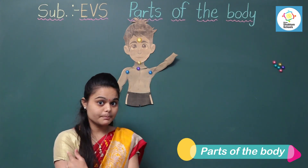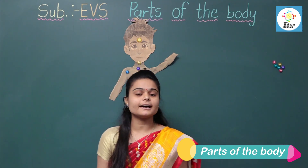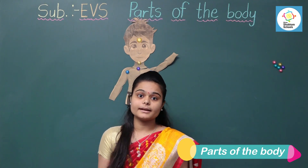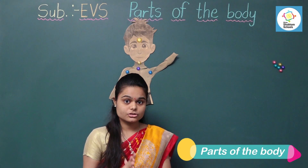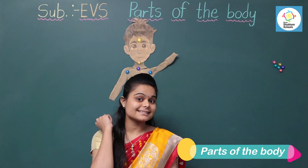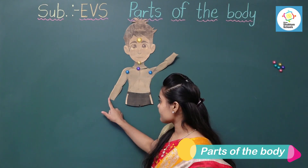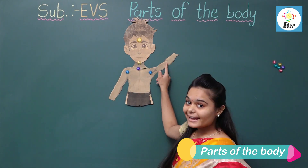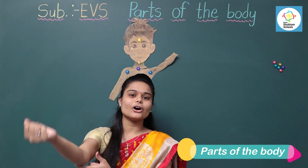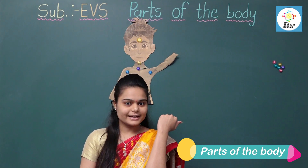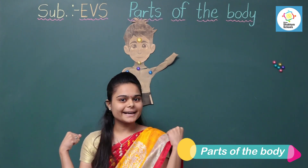Next — which part is this? These are arms. And we can move with our arms. Next — which part is this? This is elbow. We can bend our hand with the help of elbows. With the elbow's help, we can bend our arm.